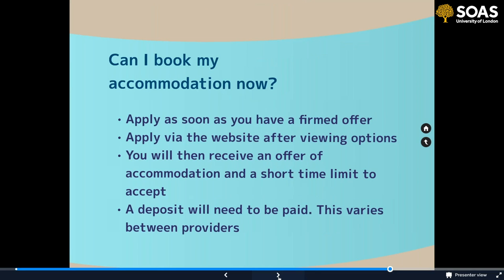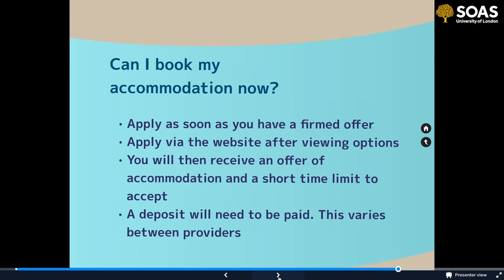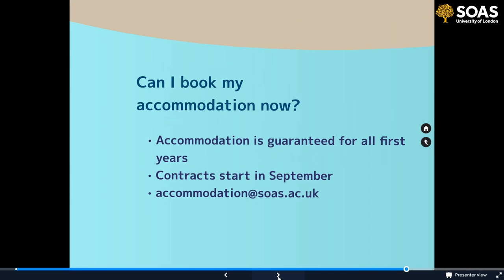You can apply for accommodation as soon as you have a firmed offer via the SOAS accommodation webpage. After viewing options, you'll receive an accommodation offer with a short time limit to accept, then pay a deposit. For first-year students, accommodation is guaranteed — so it's a good idea to start looking now. Contracts start in September. For questions, contact accommodation manager Jo Hogan at accommodation@soas.ac.uk.